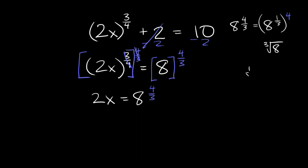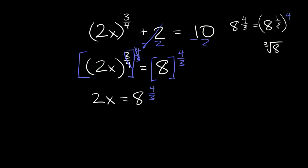Similarly, raising something to the 1/2 power is the same as taking the square root, 1/4 is the fourth root, 1/5 is the fifth root, and so on. So 8 raised to the 1/3 is the cube root of 8, which equals 2. So we get the cube root of 8 raised to the 4th power, which is 2 to the 4th, which is 16. So 8 raised to the 4/3 is simply 16.